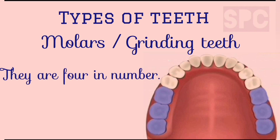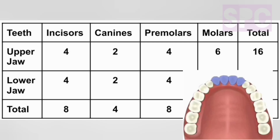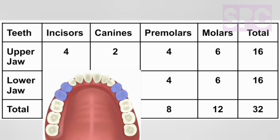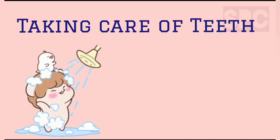The last molar on each side of both jaws is called the wisdom tooth — they are four in number. To recapitulate: incisors — 4 in upper jaw + 4 in lower jaw = 8 total; canines — 2 upper + 2 lower = 4 total; premolars — 4 upper + 4 lower = 8 total; molars — 6 upper + 6 lower = 12 total.